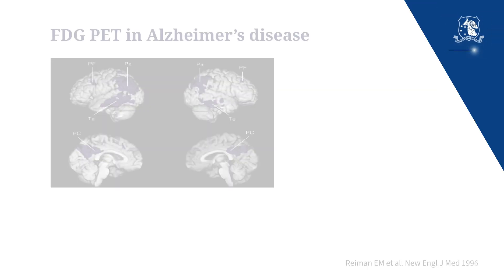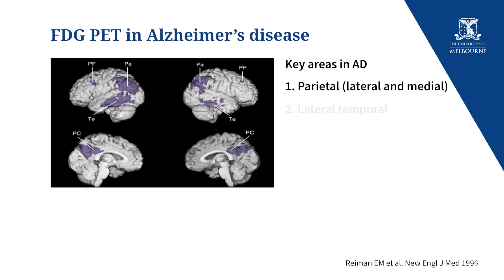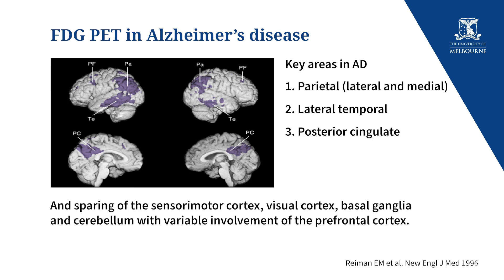FDG-PET has a characteristic appearance in patients with Alzheimer's disease, showing hypometabolism or reduced tracer uptake in the lateral parietal cortex, the lateral temporal cortex, the medial posterior parietal area known as the precuneus, and the posterior cingulate gyrus.